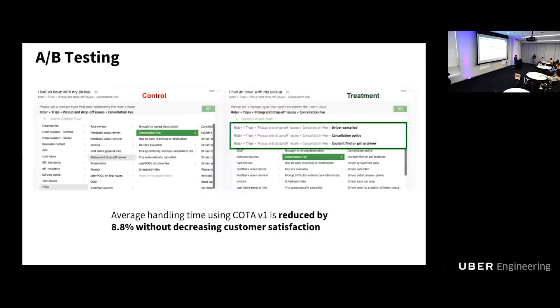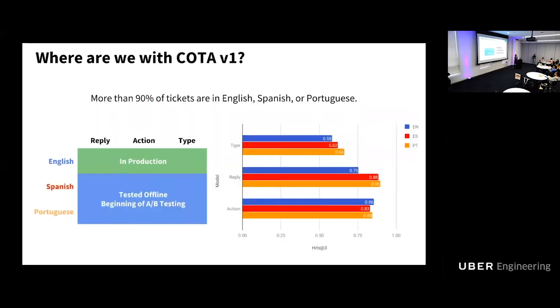After that, we take this ranking model to A-B test. We split the agents into control and treatment group. For the agent in the control group, they will just see the default setting of our customer support platform. For example, they usually need to go through this tree structure to select the correct content type. For the agent in the treatment group, they will see the top three suggestions by our COTA. And this experiment shows that our COTA can save 8.8% average handle time per ticket for the agent in the treatment group, while at the same time it's not decreasing our customer satisfaction. Because our A-B test result is positive, after that we rolled the English model out.